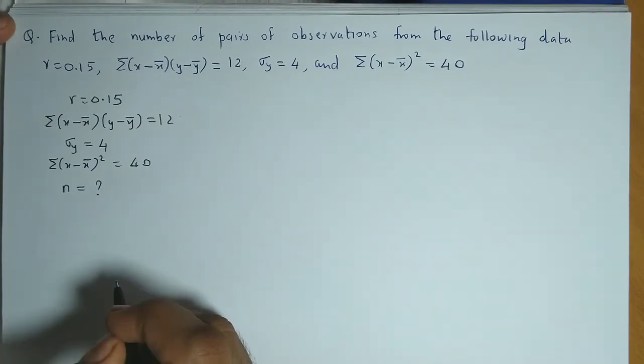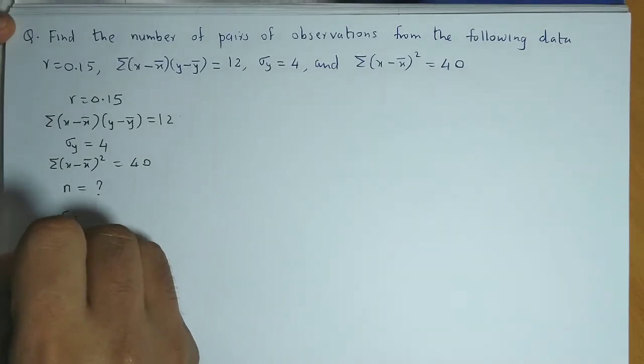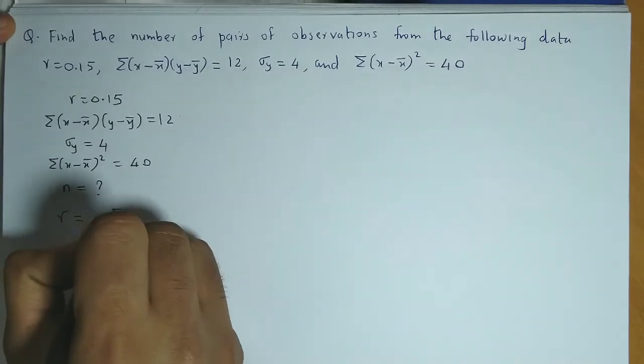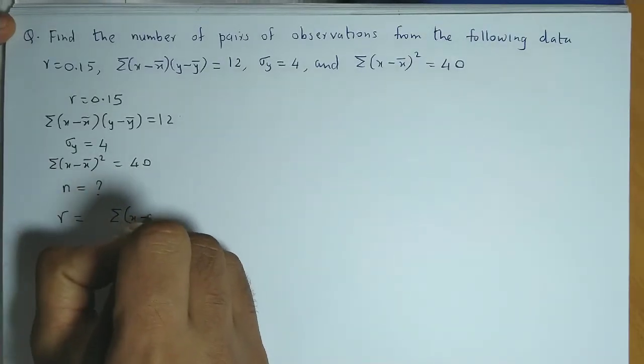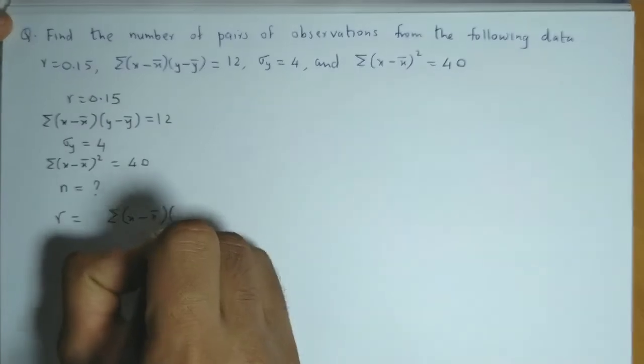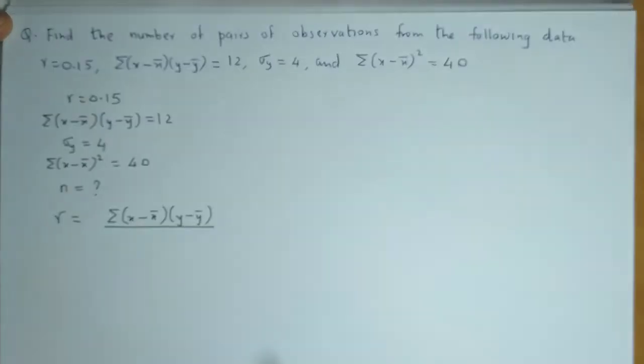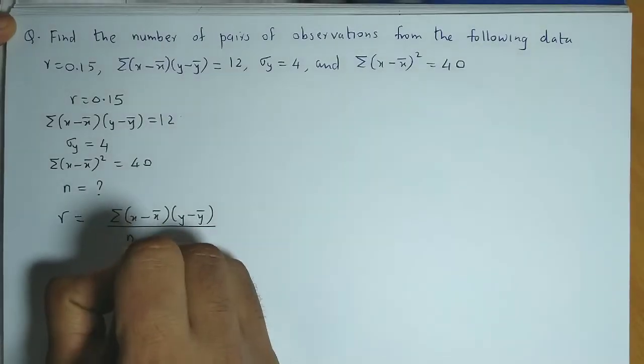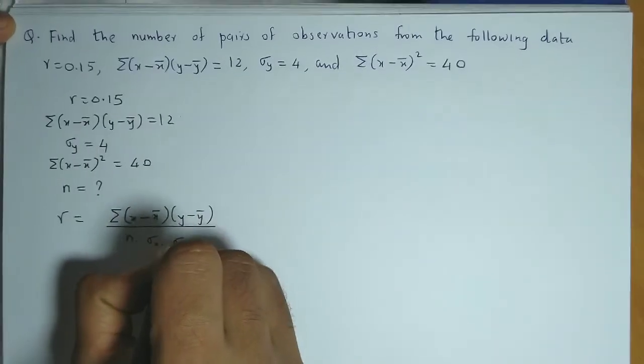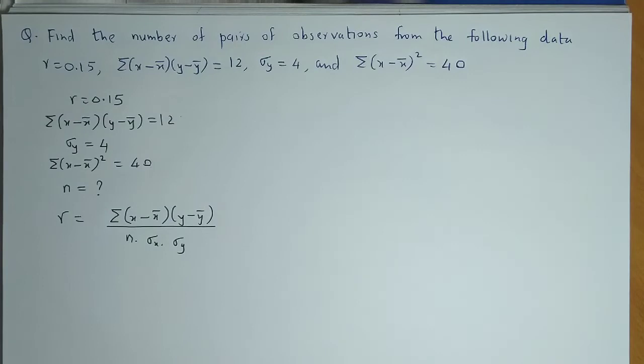So the formula that would be applied here is r equals summation of (x - x̄)(y - ȳ) upon n times standard deviation of x times standard deviation of y.